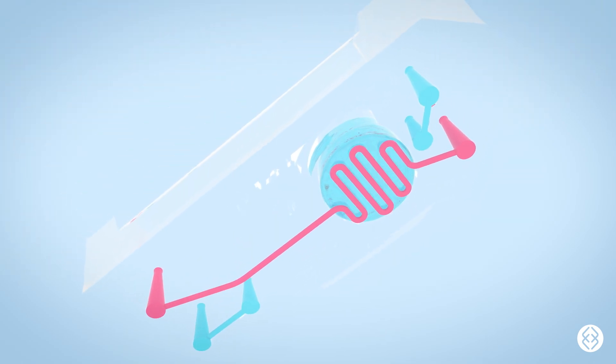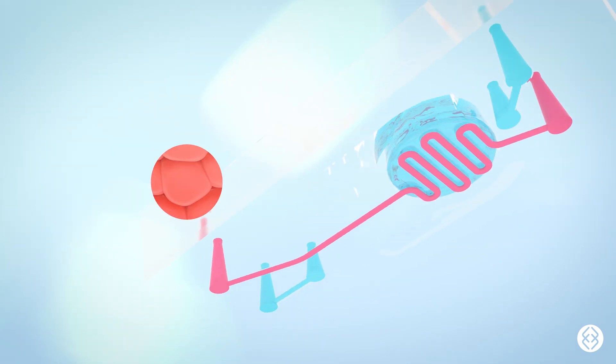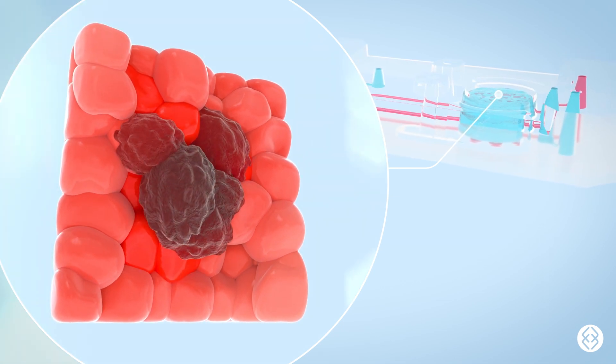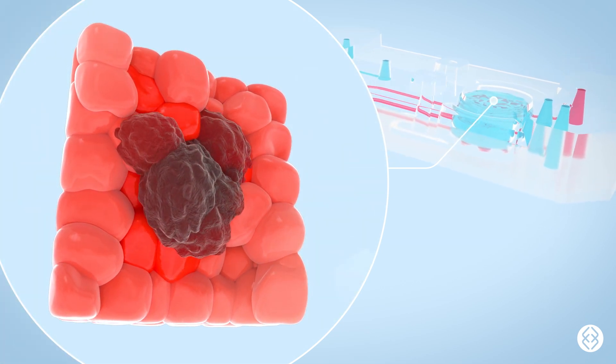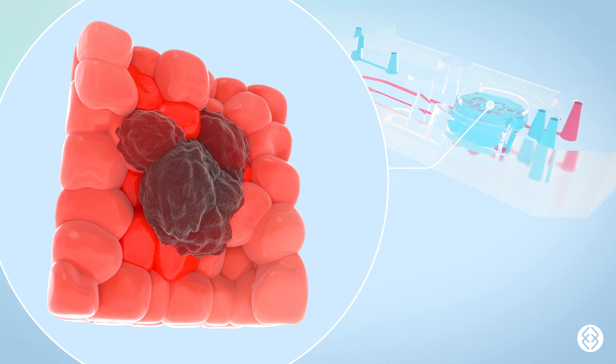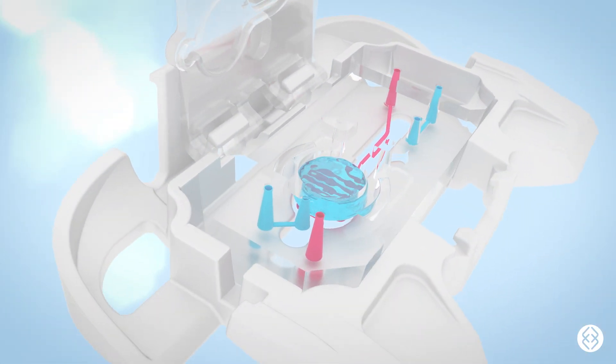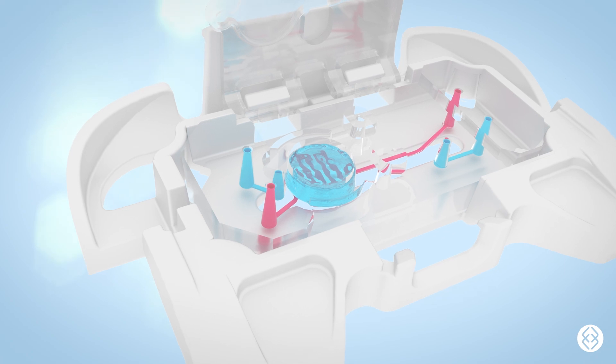These features make the chip A1 an ideal platform for modeling three-dimensional or stratified tissues such as the tumor microenvironment or skin epithelium. The hinged lid provides direct access to the epithelial tissue, enabling treatment with topical or aerosolized drugs.